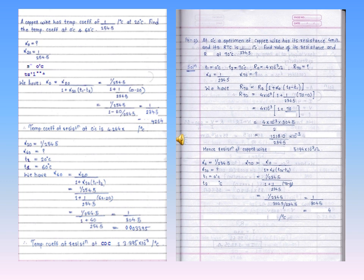This numerical may be asked for two marks. The next numerical: at 0°C, a specimen of copper wire has resistance 4 mΩ and its RTC is 1/234.5 per degree Celsius. Find the value of resistance and alpha at 70°C. The value of alpha0 and resistance at 0°C are given.